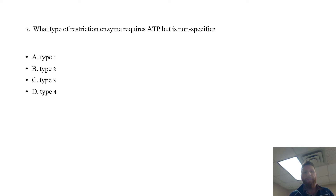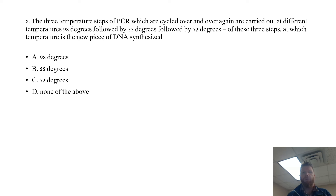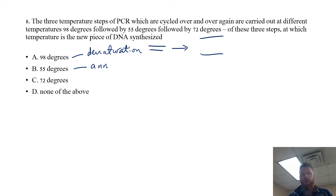The three temperature steps of PCR — cycled over and over again — are carried out at different temperatures: 98 degrees, followed by 55, and followed by 72 degrees. At which temperature is the new piece of DNA actually synthesized? At 98 degrees we have the denaturation or separation step — a double-stranded piece of DNA is separated into two individual single strands. At 55 degrees we have the annealing or hybridization step, at which point a primer binds to each of our two strands of DNA. Then finally our third step is polymerization, where DNA polymerase synthesizes our new strands. So the answer is C: 72 degrees.